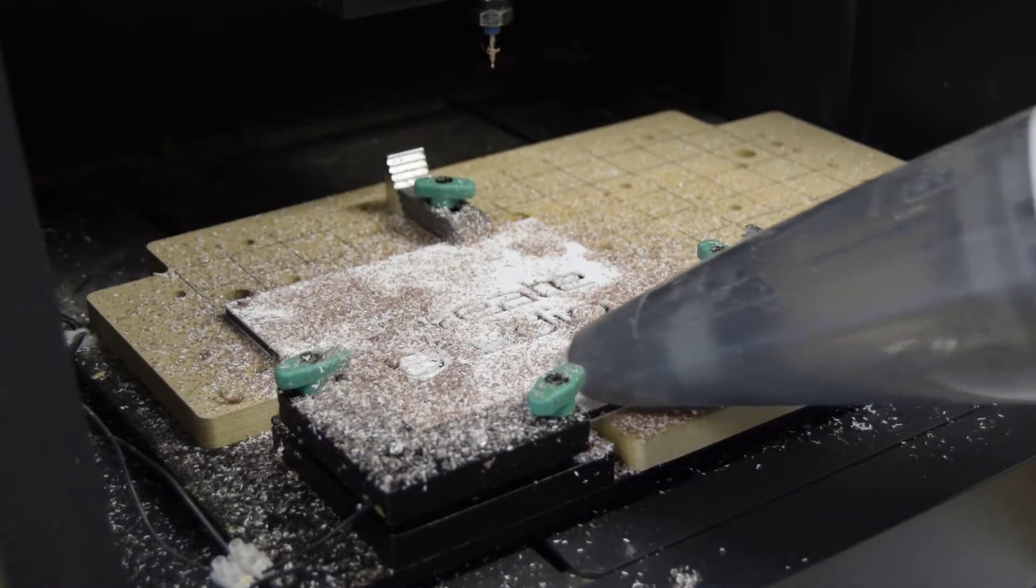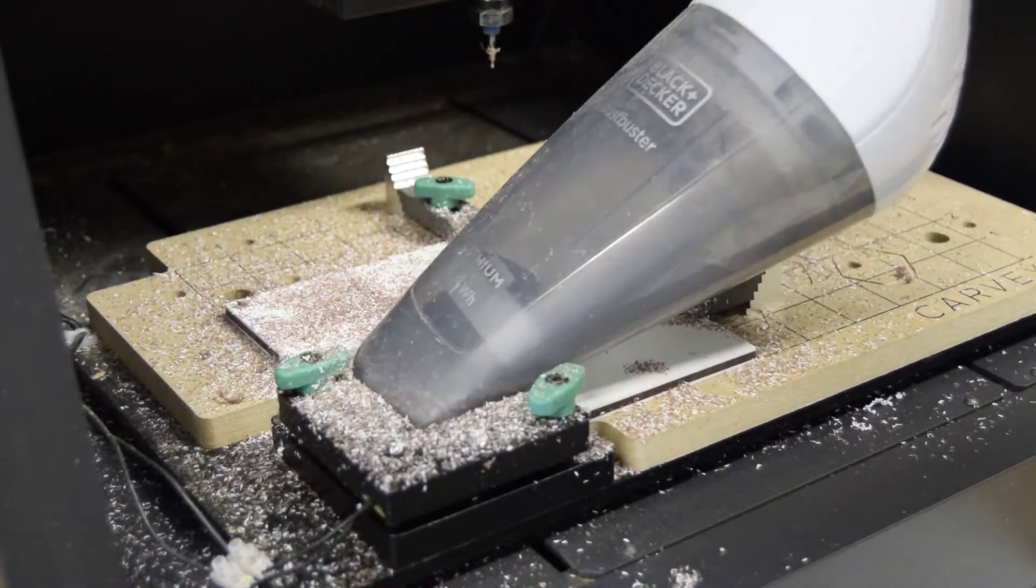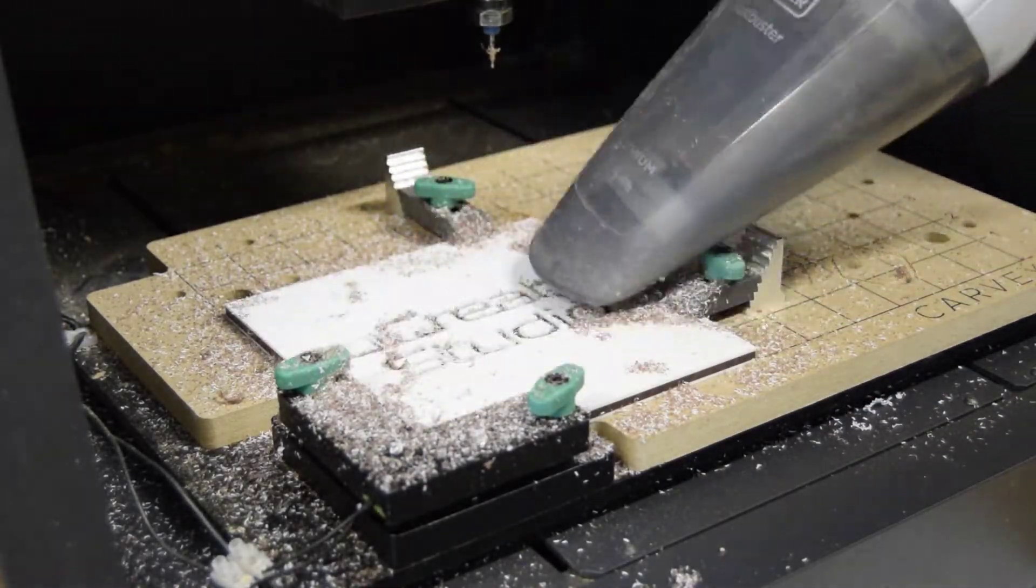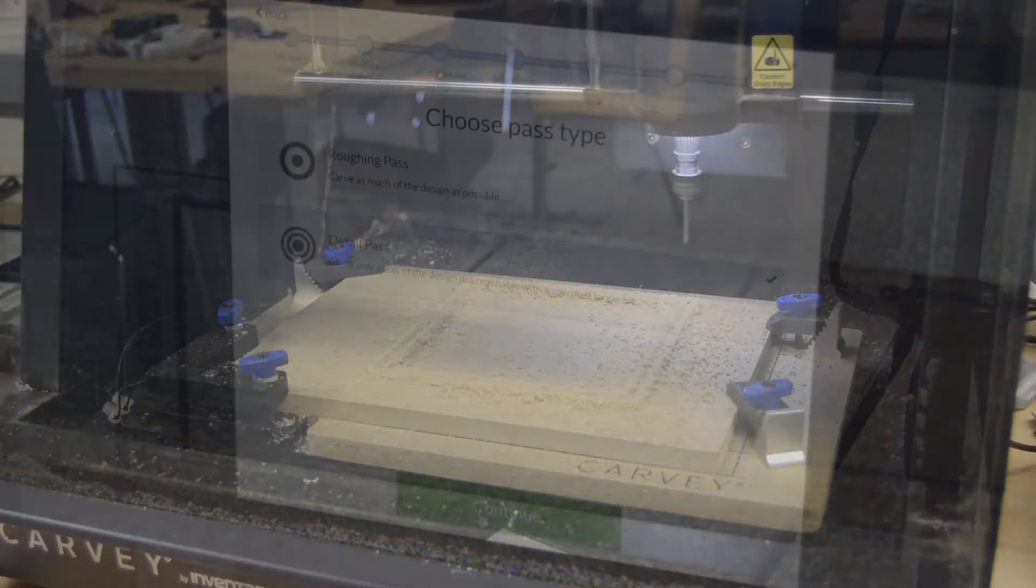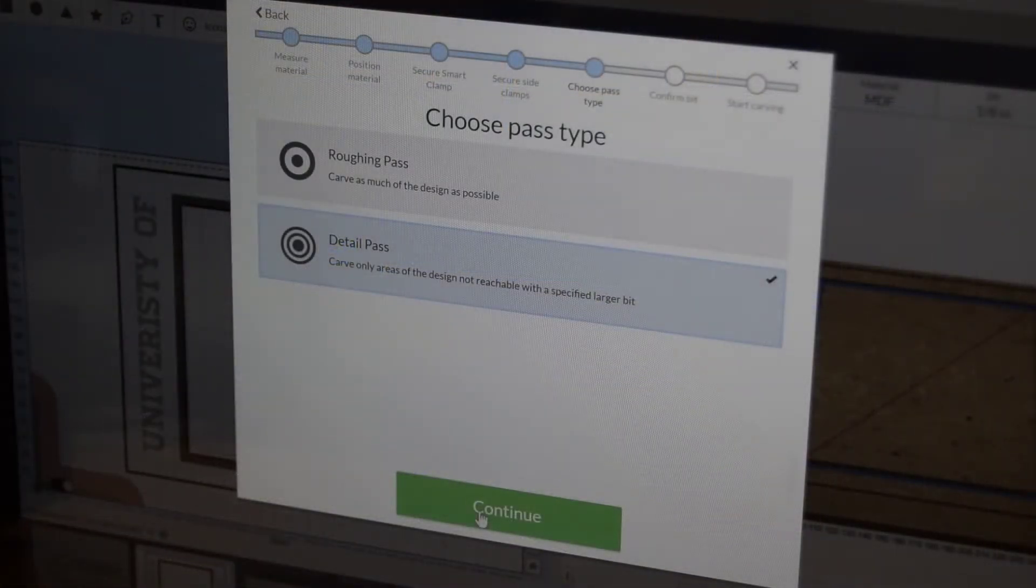Once the carve is finished, make sure to vacuum your design before unscrewing the clamps. If you are doing a roughing and a detailed pass, you can change the drill bit without removing your material.